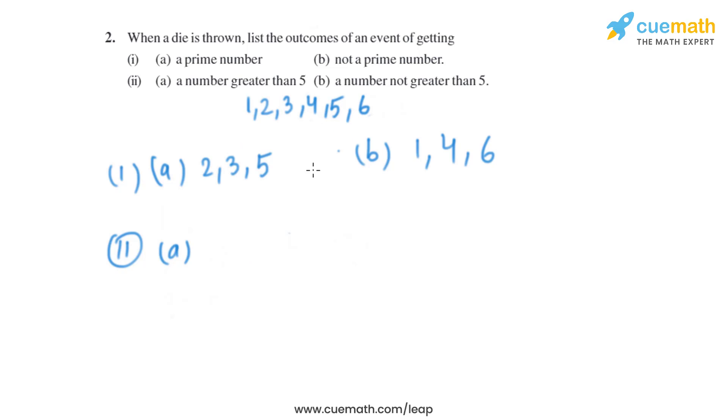A number greater than five is basically six. Now let's move to part (d), a number not greater than five. So a number that is not greater than five is 1, 2, 3, 4, and even 5. Five is not greater than five, so these are the five possible outcomes.